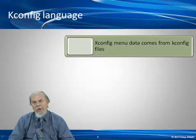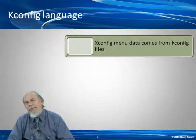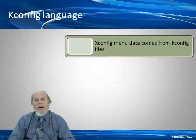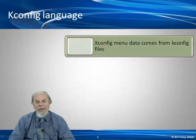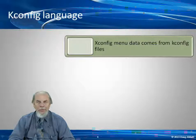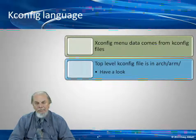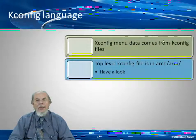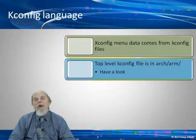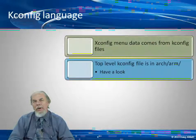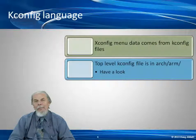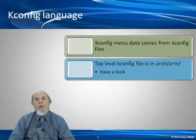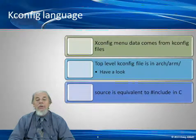All of the menus displayed by xconfig are generated by files named kconfig, all written in what's called kconfig language. These files are scattered all over the kernel source tree. The top-level kconfig file is in arch/arm, and it's useful to look at that and compare it with the xconfig menu, which is exactly what we're going to do in just a minute.